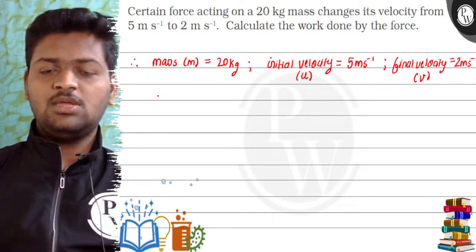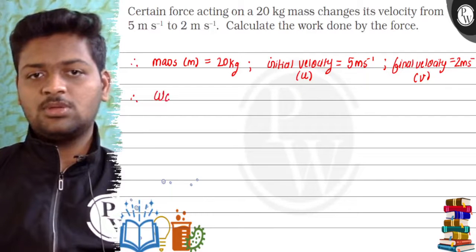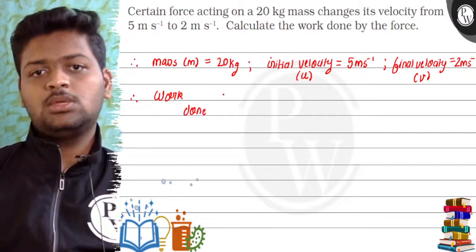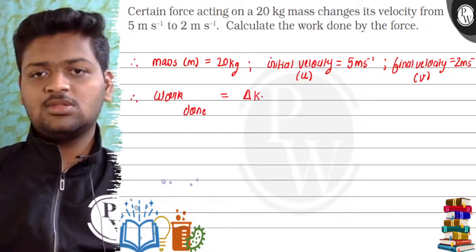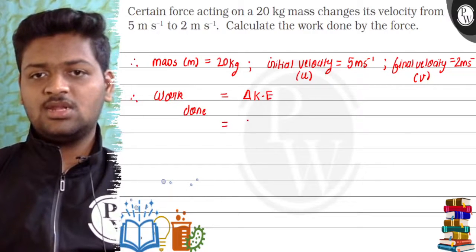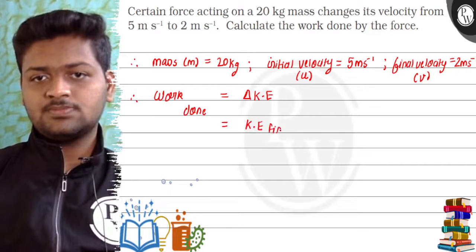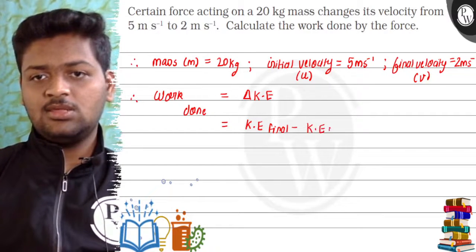Now we have a basic formula: Work done is equal to change in kinetic energy. So change in kinetic energy, that is kinetic energy final minus kinetic energy initial.